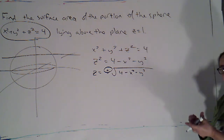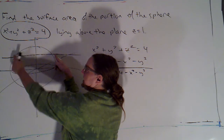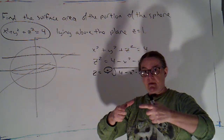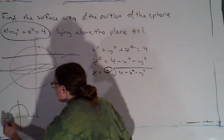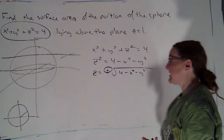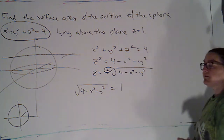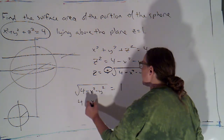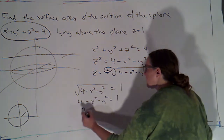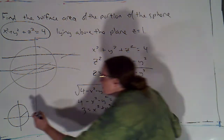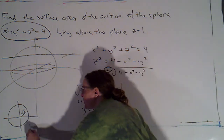I want to see what region in the xy-plane I'm integrating over. I need to find where the sphere intersects the plane z equals 1 — that'll be some circle. Dropping that circle onto the xy-plane and filling it in gives the disk I'll integrate over. Setting z on the sphere equal to 1, squaring both sides gives 4 minus x squared minus y squared equals 1, so x squared plus y squared equals 3. That means we're working on a disk of radius root 3, which is the region D.